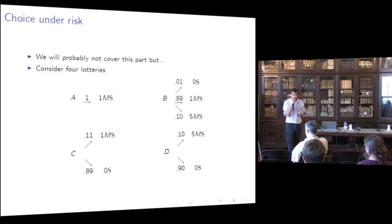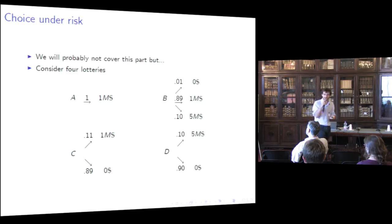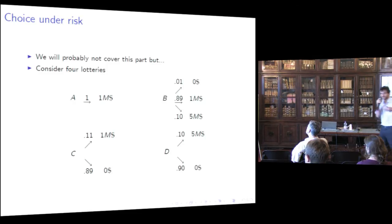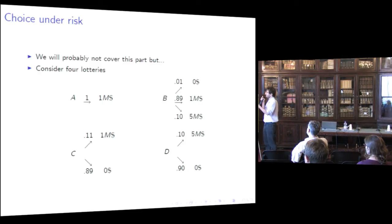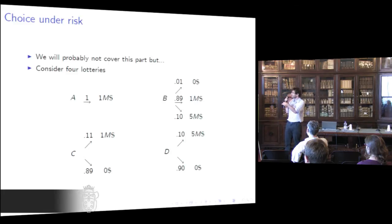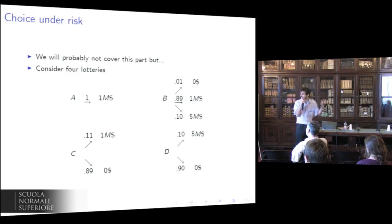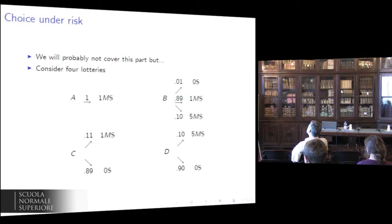When you choose A or B, you do not know what outcome you will receive. This outcome depends on known probabilities: with probability 0.01 you receive zero dollars, with probability 0.89 you receive one million, and with probability 0.10 you receive five million. So it's a problem of choice under uncertainty, but you know the odds — they are told to you.